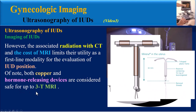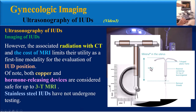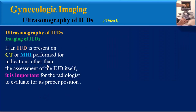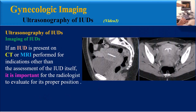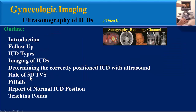Both copper and hormone-releasing devices are considered safe for up to three tesla MRI, but stainless steel IUDs have not undergone any MRI testing. If an IUD is present on CT or MRI performed for other indications, it is important for the radiologist to evaluate for proper position. For example, sagittal and coronal non-enhanced images can demonstrate a radio-dense IUD properly positioned within the uterine fundus.